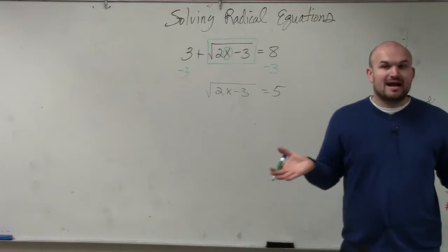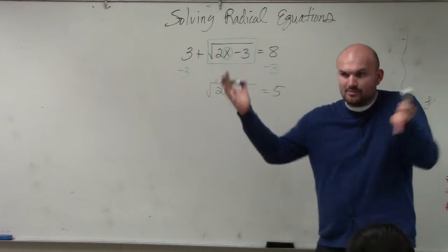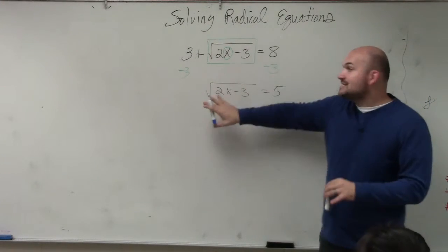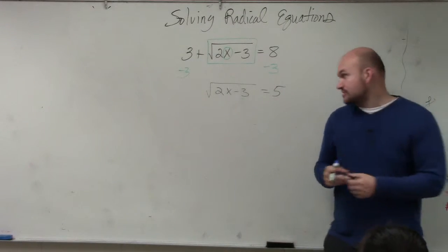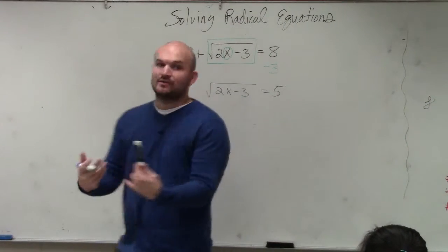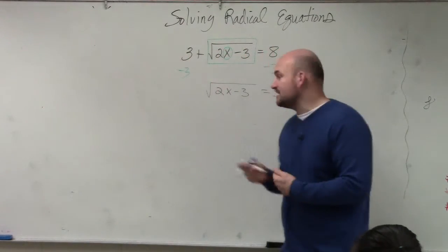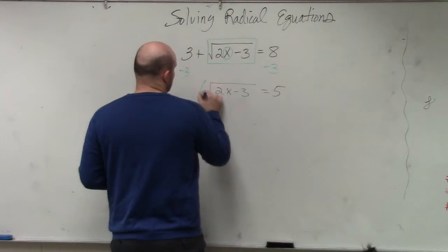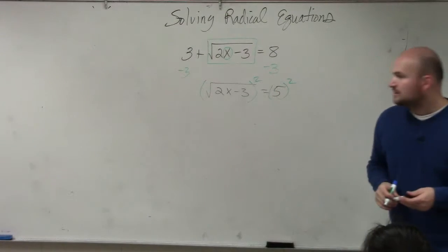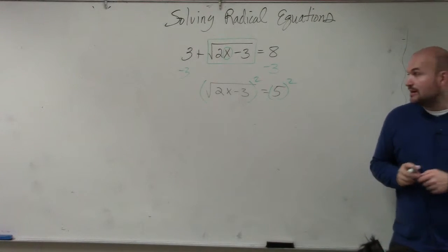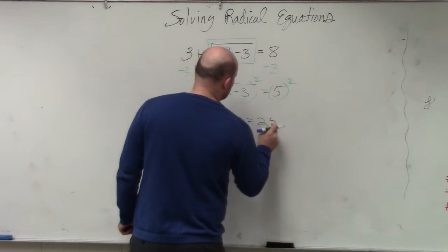Now that we've isolated the radical — remember when we isolated absolute value before we started solving? This is kind of the same thing. You're going to isolate the radical first. Now we do our inverse operation: to undo the radical, the inverse operation of taking the square root is squaring. And if it was the cube root, you would cube; if it was the fourth root, you'd take the fourth power. So I'm going to square both sides, and that leaves me with 2x minus 3 equals 25.